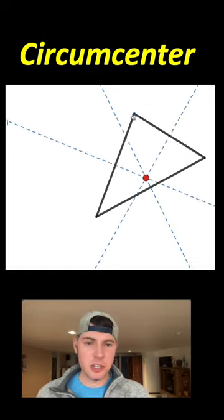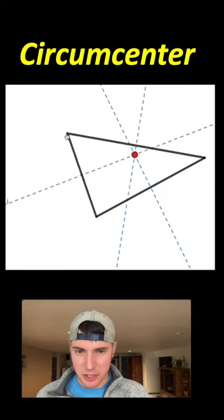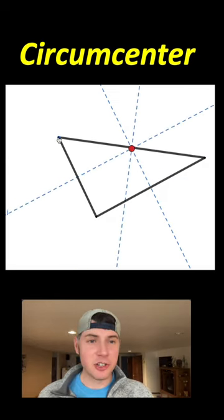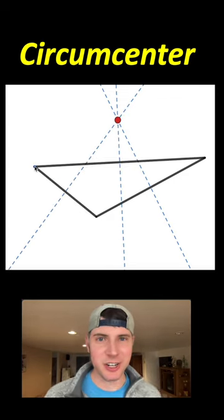As long as the triangle is acute, the circumcenter is inside the triangle. Once the triangle becomes right, it lies on the triangle. And once it becomes obtuse, it's outside of the triangle.